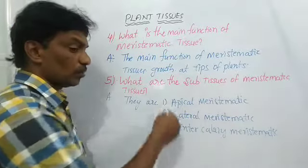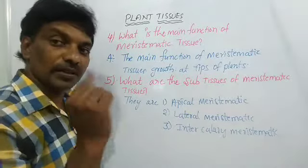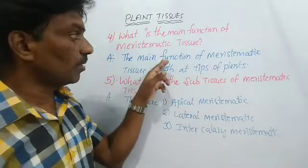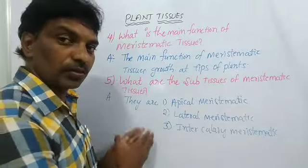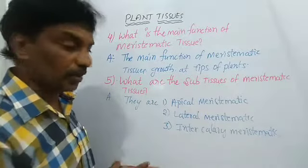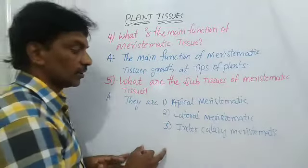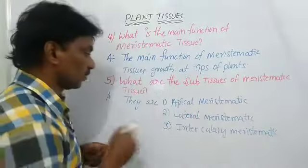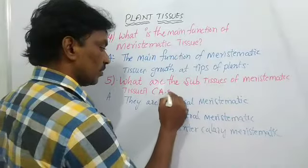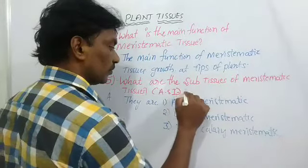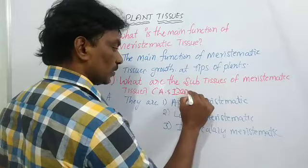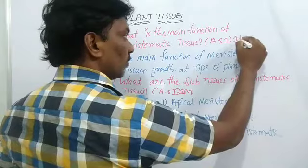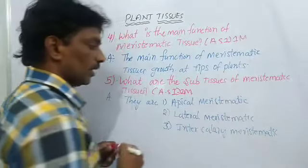What I am going to ask here — these two are also concepts of understanding, Academic Standard 1. This can be asked as a one mark or two marks question. The question about sub-tissues of Meristematic Tissue may be given as two marks.